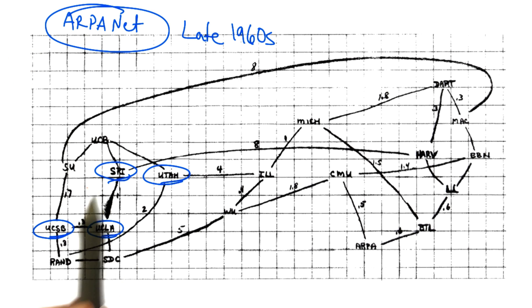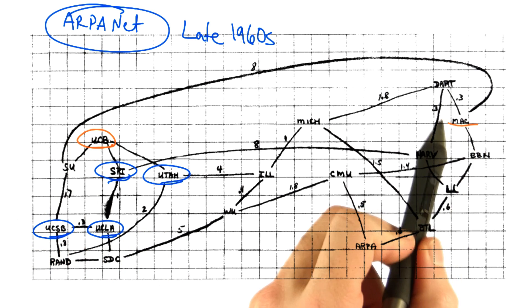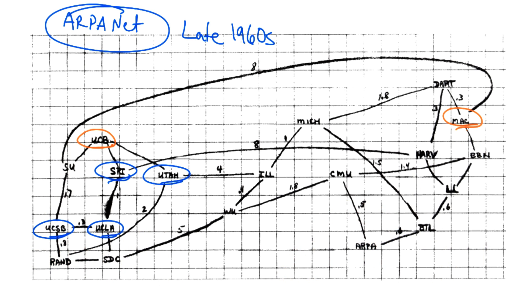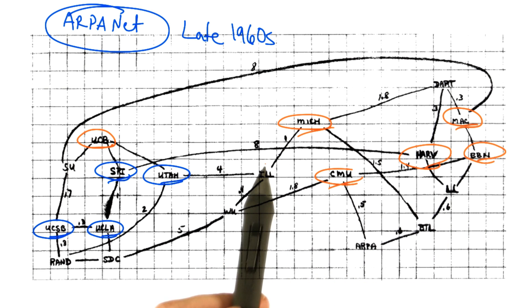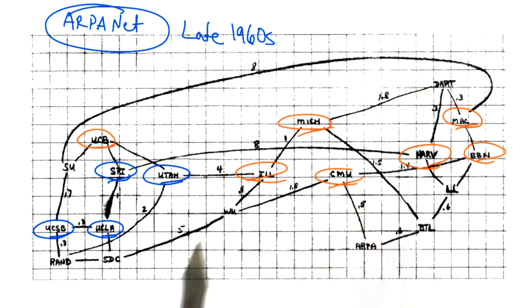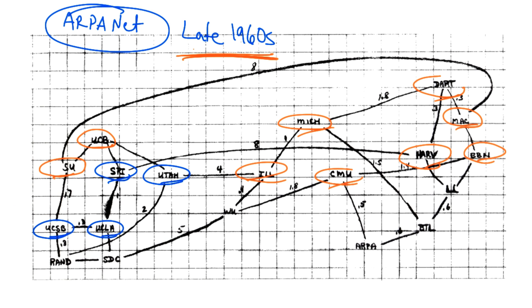You can see the four original nodes here, as well as some other well-known players, such as Berkeley, the Mac Project at MIT, BBN, Harvard, Carnegie Mellon, Michigan, Illinois, Dartmouth, Stanford, and so forth. This is what the ARPANET looked like in the late 1960s.